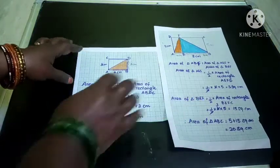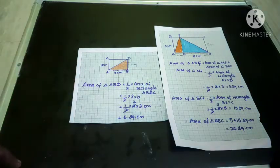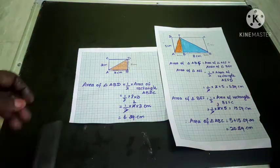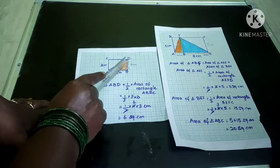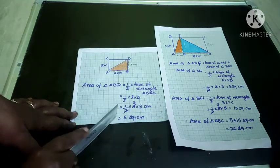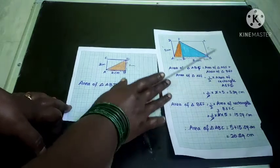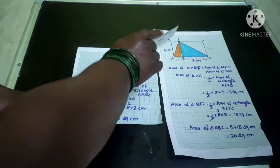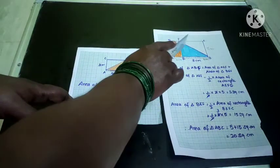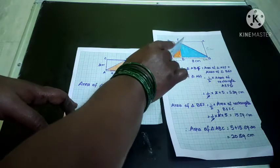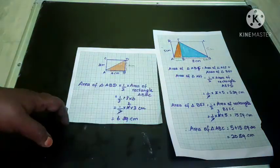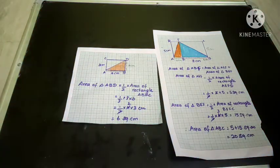So we have seen how to find the area of a triangle using two methods. If the triangle is exactly half of a rectangle, you can straight away apply the formula. If the triangle is not simply half of the rectangle, you divide it into two parts, find the area of each triangle separately, and then add both areas at the end.